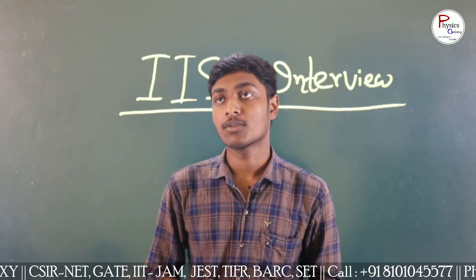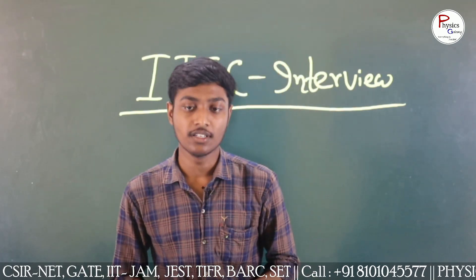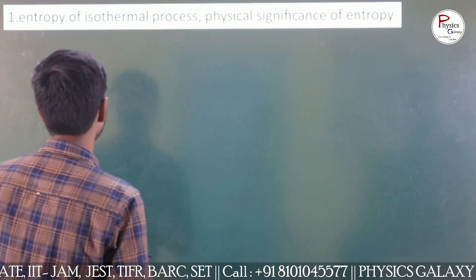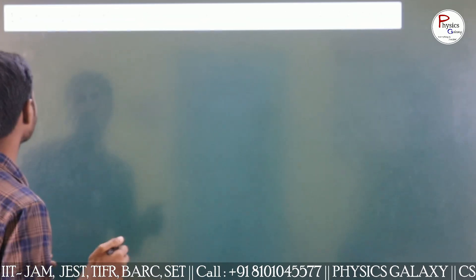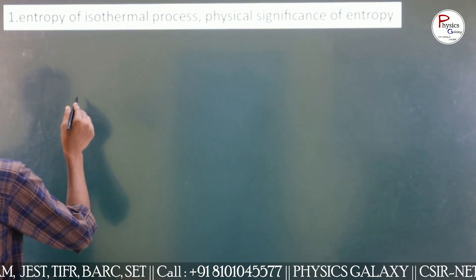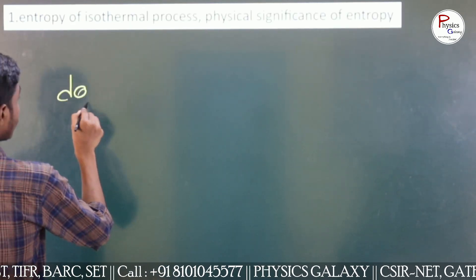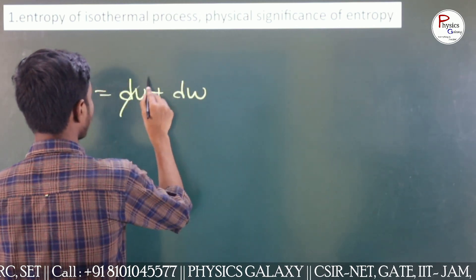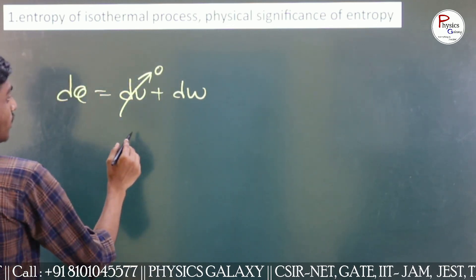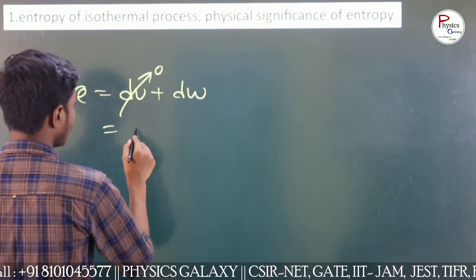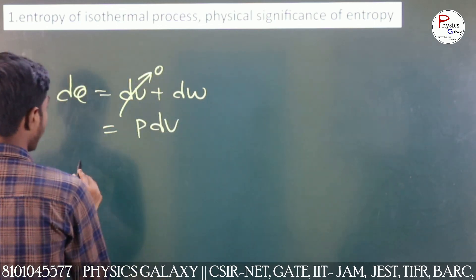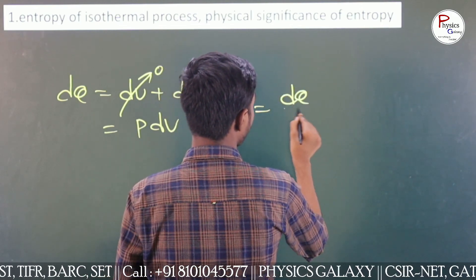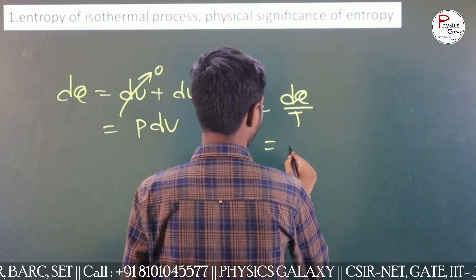The first professor asked me a simple question in thermodynamics: what is the entropy of an isothermal process? As you know, from the first law, DQ equals DU plus DW. For an isothermal process, DU goes to zero, and DW equals PDV, so entropy is equal to DQ over T.